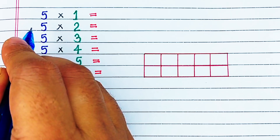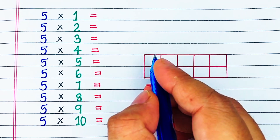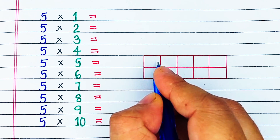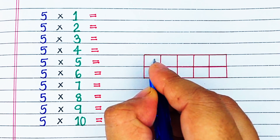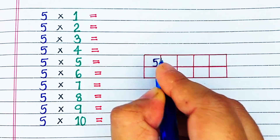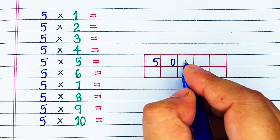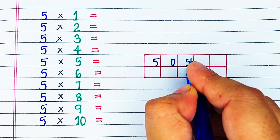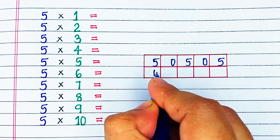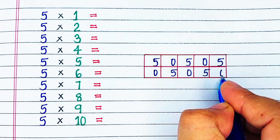Next up, we have the maths trick for 5 times table. We will start by drawing out a grid of 5 by 2, that means 5 columns and 2 rows. Now, we will start with the first box and start writing 5 and 0 alternately. So, we write 5, 0, 5, 0, 5, 0, 5, 0, 5, 0.